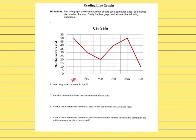From March all the way through May, what happened to the car sales? They went up, because the number of cars sold, on average, went up. And what happened after that? From May to June, it went down one more time.